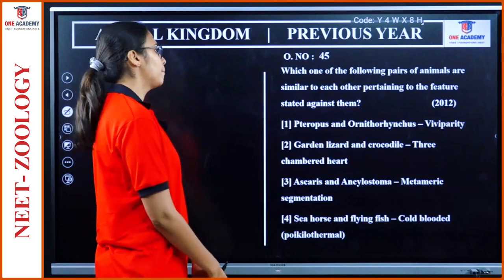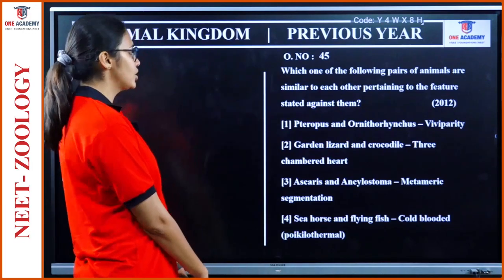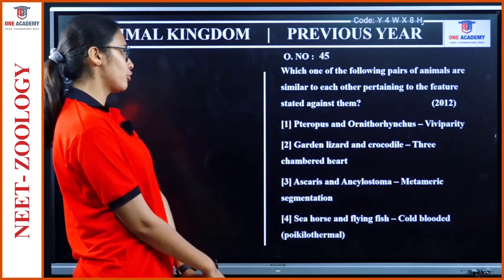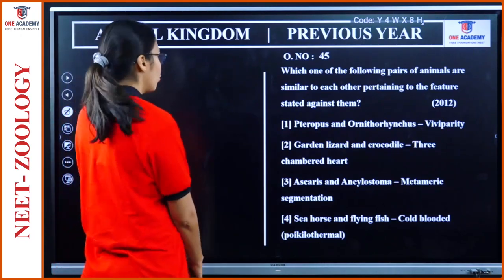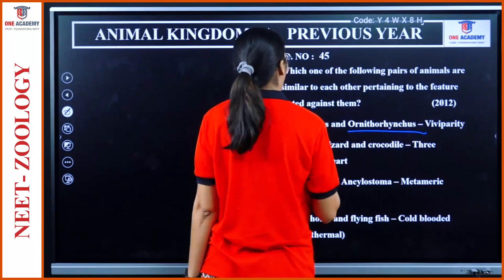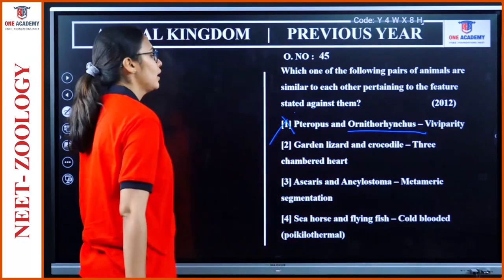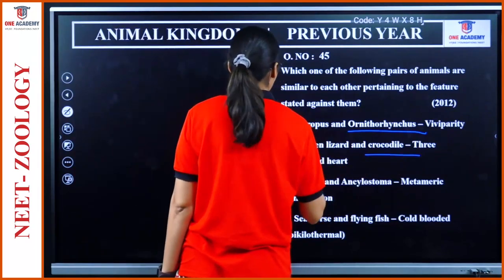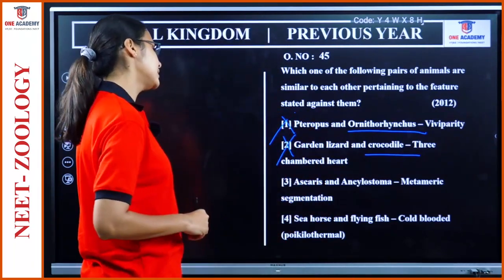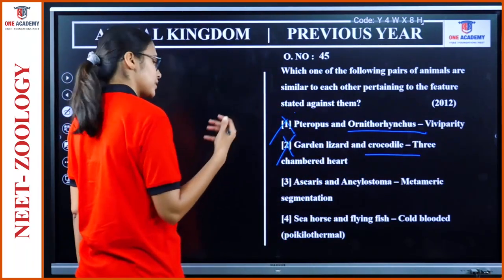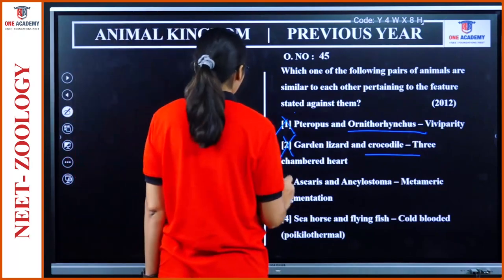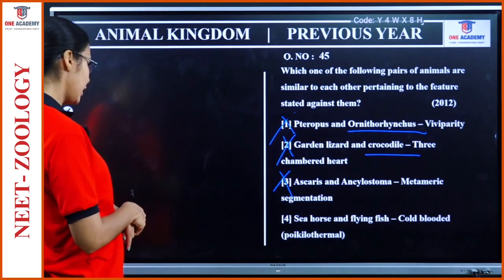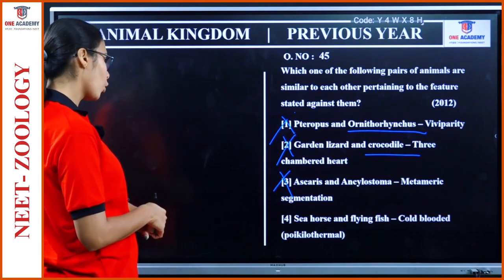Question 45: 'Which pair of animals is similar pertaining to the feature stated?' Torpedo and Ornithorhynchus — viviparity — no. Garden lizard and crocodile — three-chambered heart — crocodile has four-chambered heart — wrong. Ascaris and Ancylostoma — metameric segmentation — no, they have no segmentation. Sea horse and flying fish — cold-blooded (poikilothermal) — yes. Option 4.